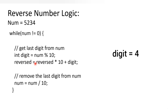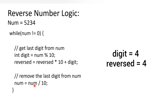We will have another variable called reversed, initially assigned to 0. Now for reversed, we say reversed equals reversed into 10. In the first iteration it will be 0 because reversed is initially 0, so 0 into 10 is 0, plus digit which is 4, so reversed will have the value 4. Then we need to update the number each time, removing the last digit since we have already used 4.